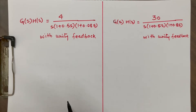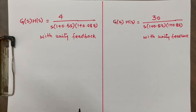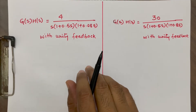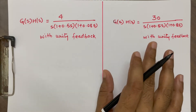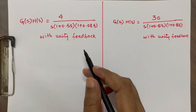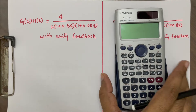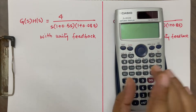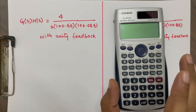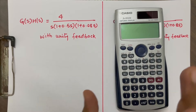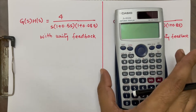Hello friends, welcome to our YouTube channel RF Design Basics. Normally for stability we plot a Bode plot in the control system and then we find gain margin and phase margin. In this video, without using a Bode plot and without doing any kind of plot, I am going to explain how to find gain margin and phase margin just by using a scientific calculator. Listen to each and every step carefully — this will be a very accurate phase margin and gain margin calculation.